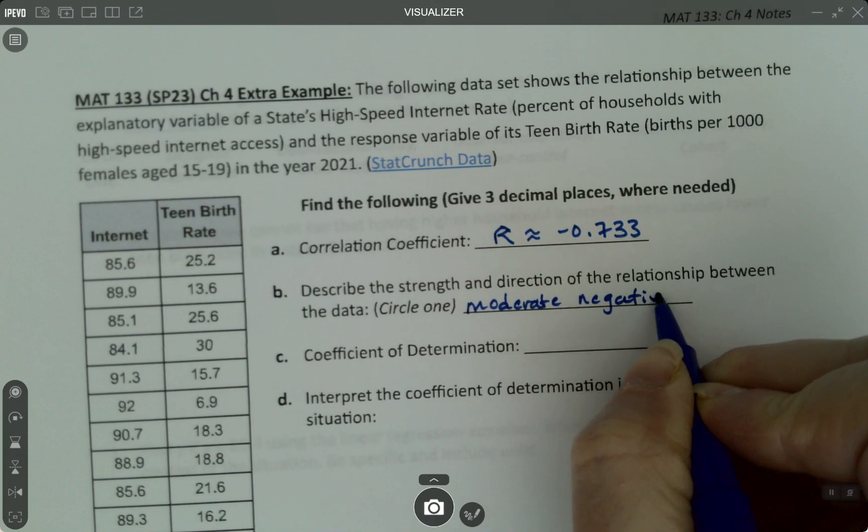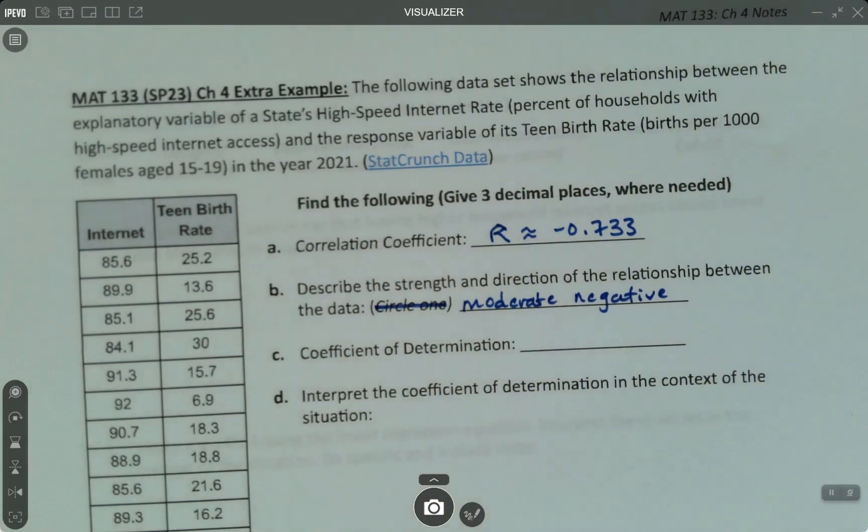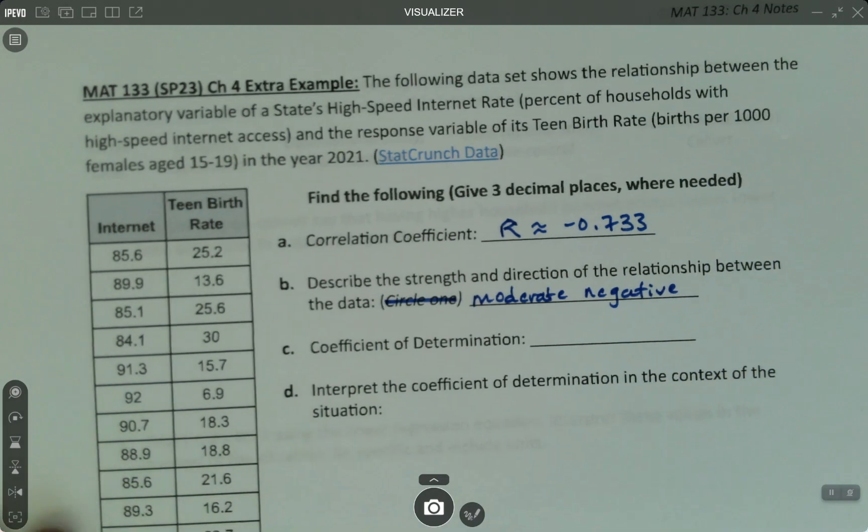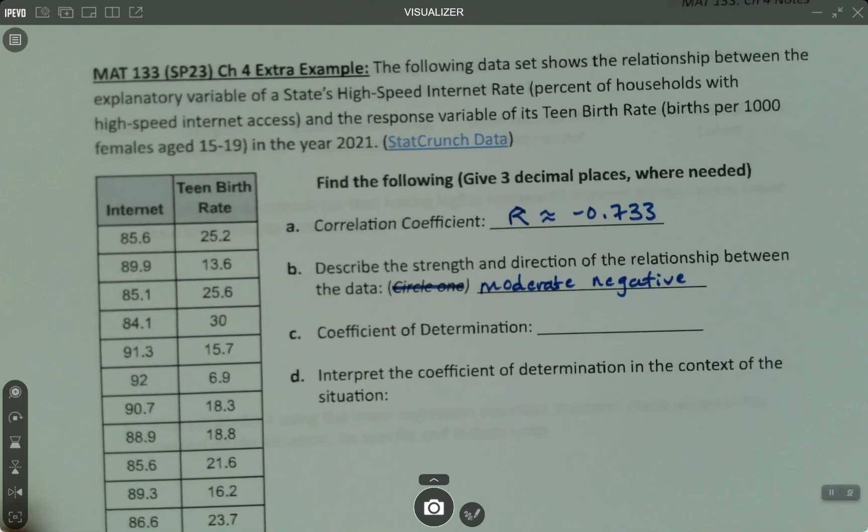So that's what we'll say. Moderate negative. It used to have a circling there, but I got rid of it. So that's a typo. I'll fix that. I had a multiple choice there, but I changed it to just filling it in.